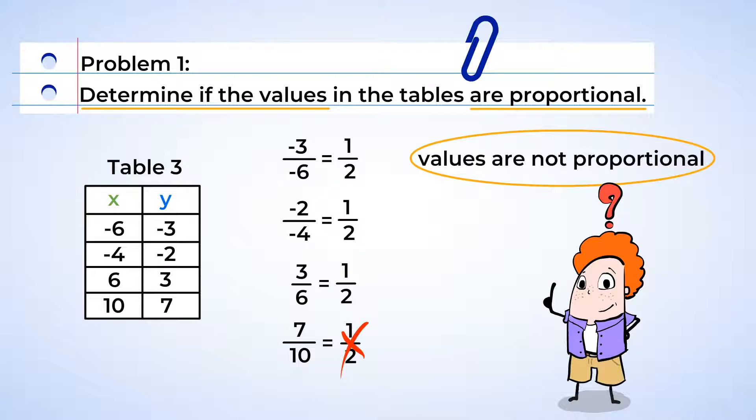Could we make these values proportional? How can we change 7 or 10 to make them proportional? The ratio that was created with all of the other values was 1 half. If we kept the y value of 7 the same, we would need to change the x value to 14 to get a ratio of 1 half. Another option would be if we kept the x value, 10, the same. The y value would then have to be 5 to have a ratio of 1 half. Look at that! We were able to make the values in the table proportional.